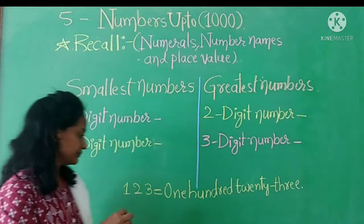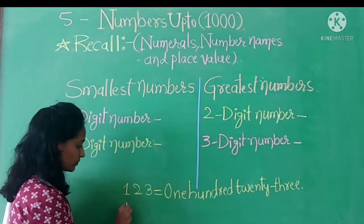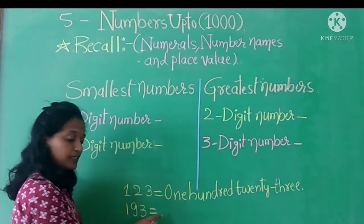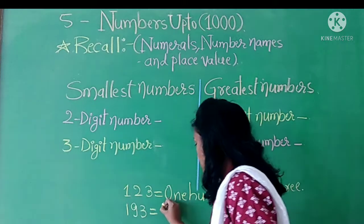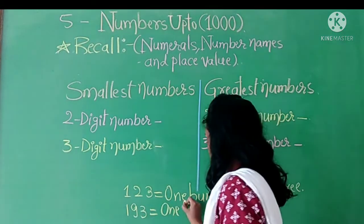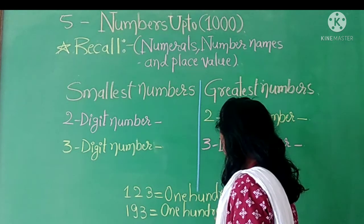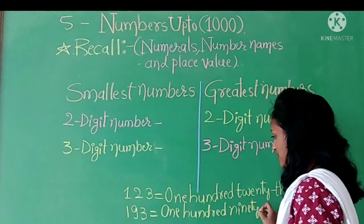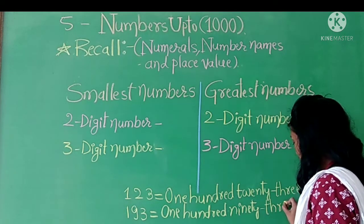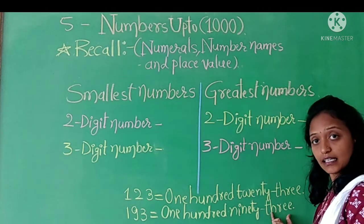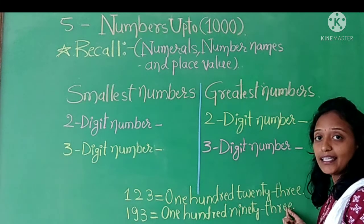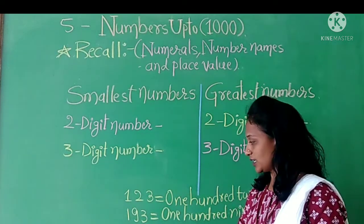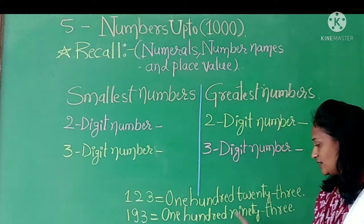Let us have one more example. What is the numeral, children? One hundred ninety three. Write it in words: one hundred ninety three. I will repeat: the given numeral is one hundred ninety three, and we have written in words — one hundred ninety three. I hope you have noted my point.